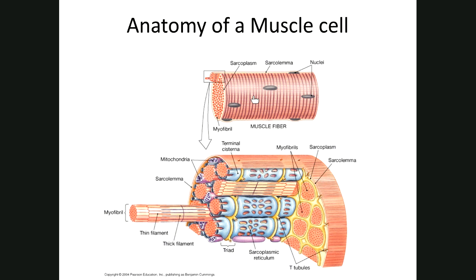Muscle cells have special naming for some of their features. The sarcolemma — sarco means flesh, lemma means sheath — is the cell membrane, or plasma membrane, of a muscle cell. When talking about muscles you'll use the term sarcolemma instead of plasma membrane.